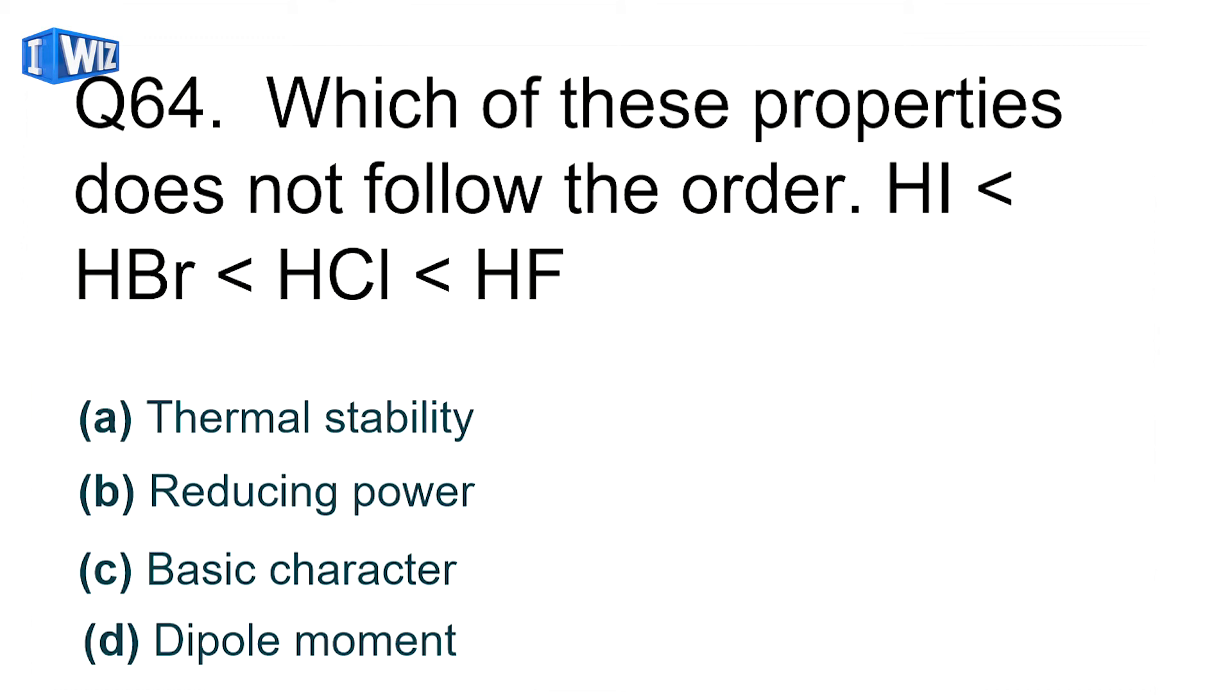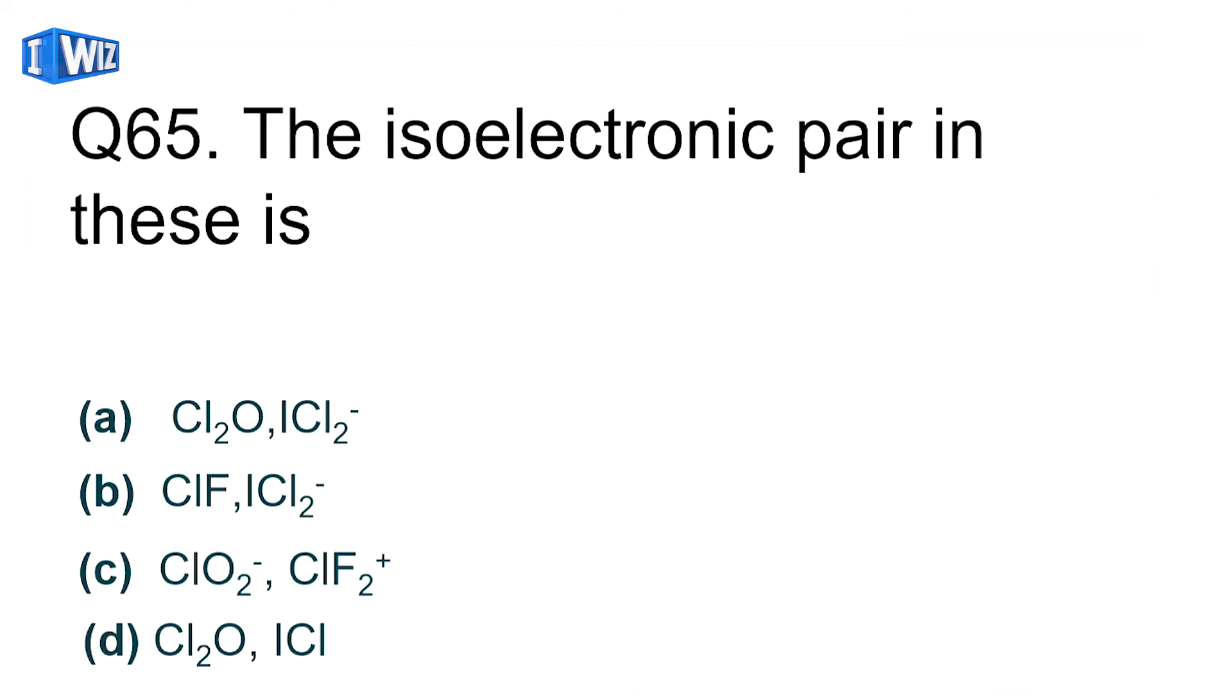Which property does not follow the order HI less than HBr less than HCl less than HF? The answer is reducing power, because reducing power is highest for HI. HI has the most dissimilar sizes of H and I, so the bond easily breaks. For the rest, similar size gives higher values for basic character, dipole moment, etc. So reducing power is the correct answer.